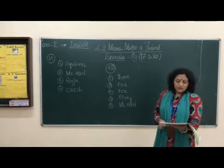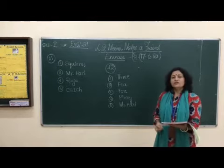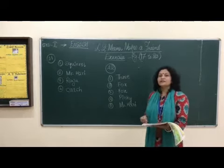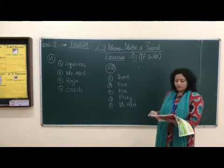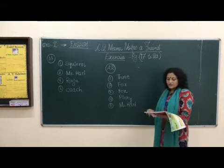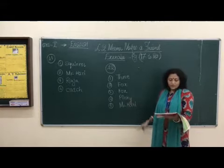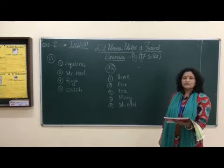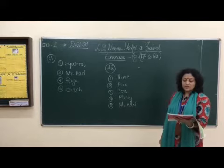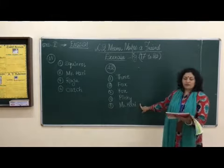Number two: which animal is wearing a red scarf? The fox was wearing a red scarf. Number three: which animal became Meena's friend? Fox became Meena's friend. Number four: what is the name of the fluffy bunny? The name of the fluffy bunny was Pinkie. Number five: who introduces Meena to the class? The class teacher Mr. Hari introduces Meena to the class.